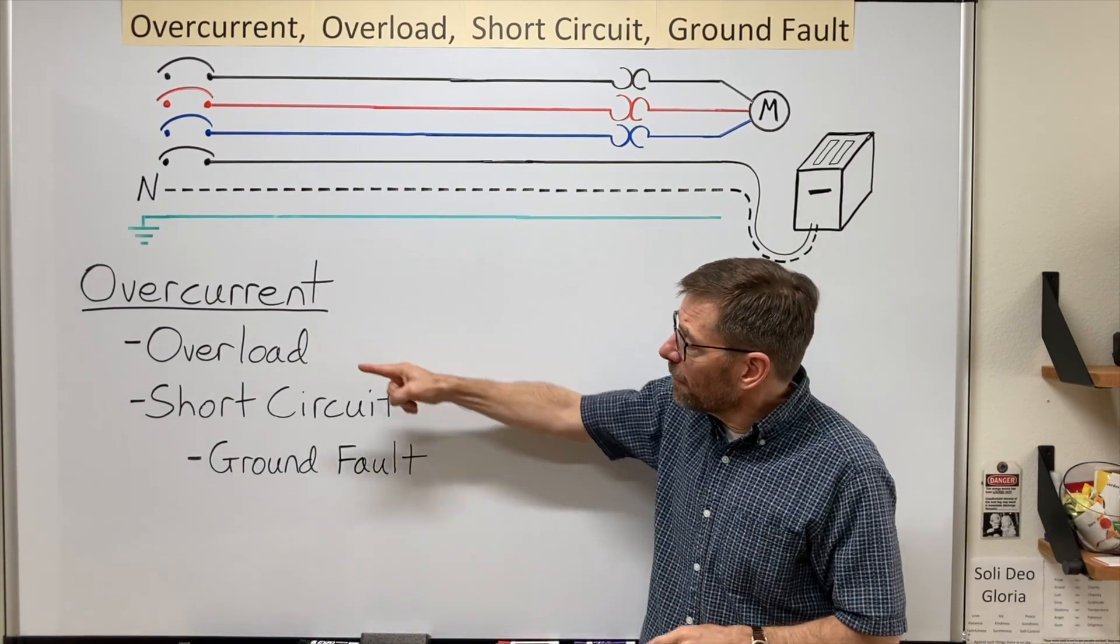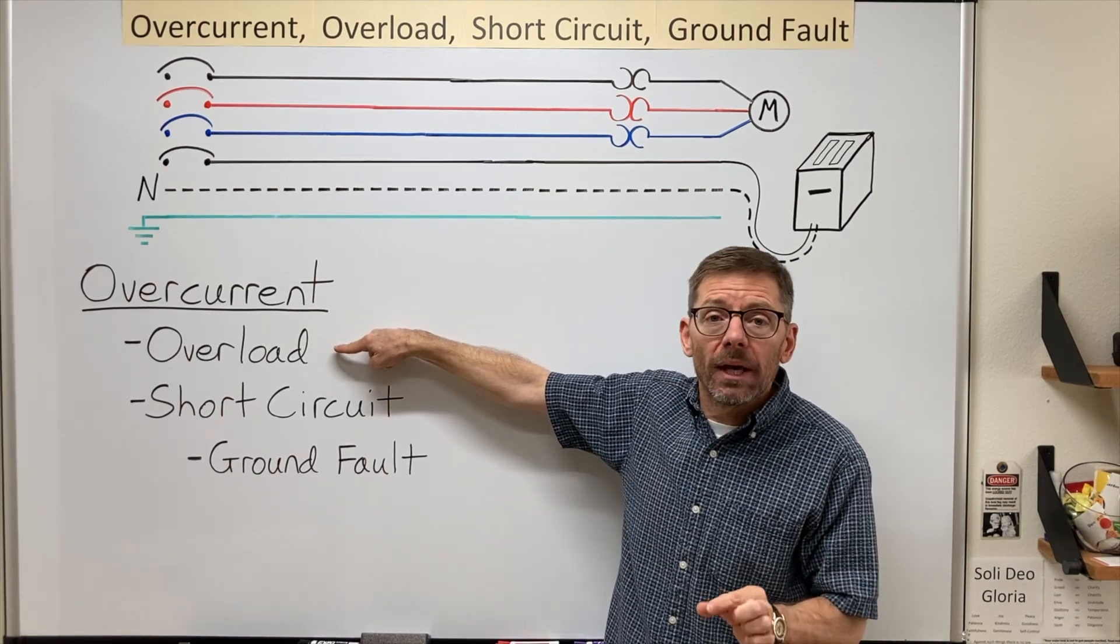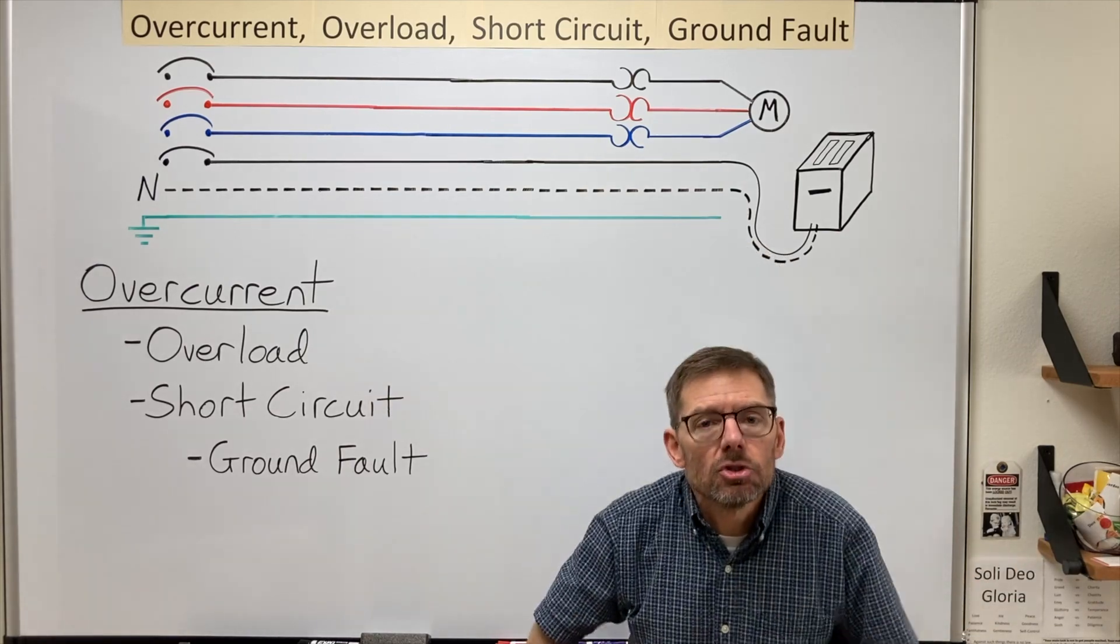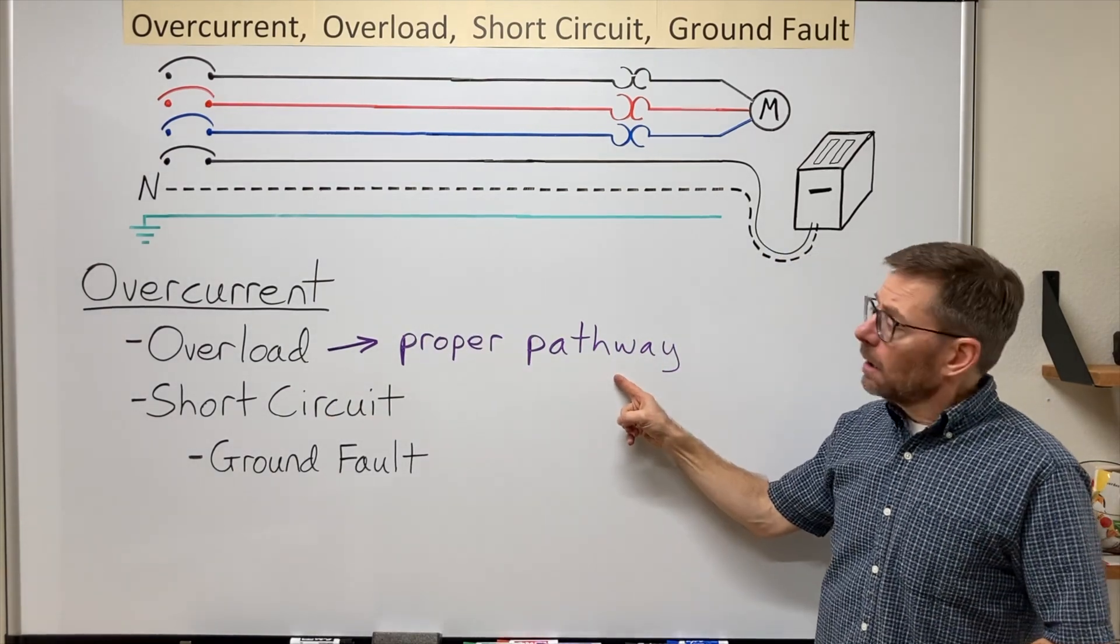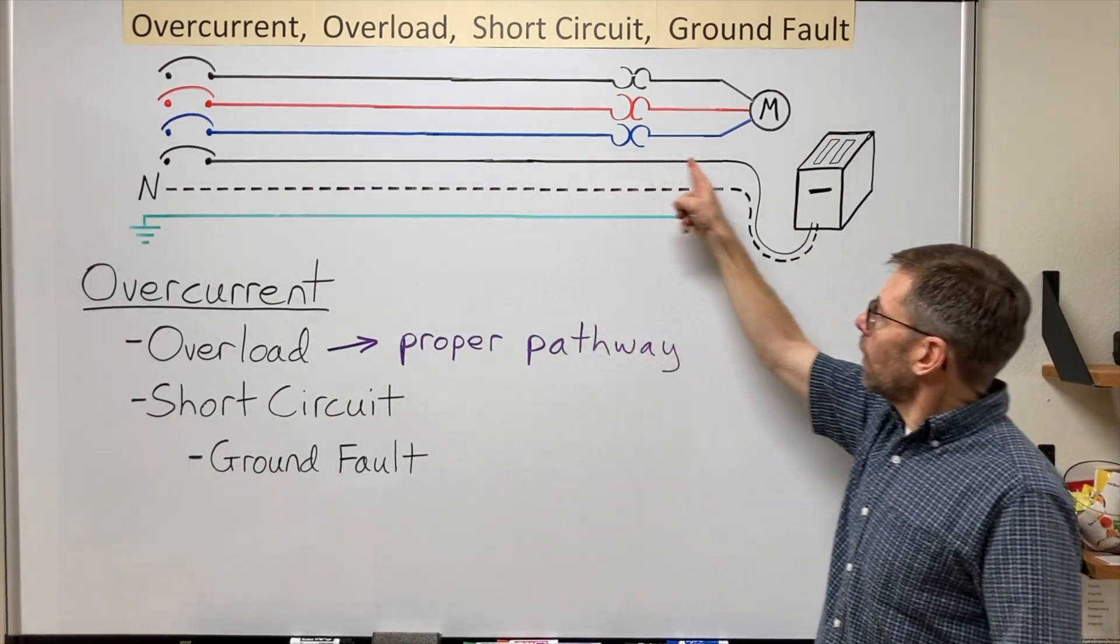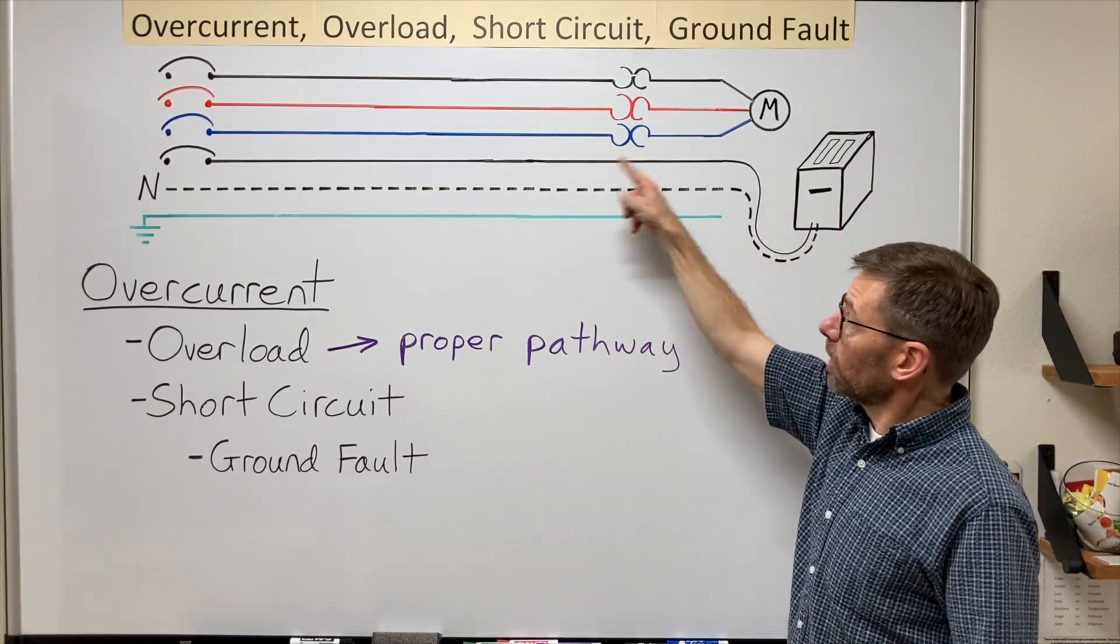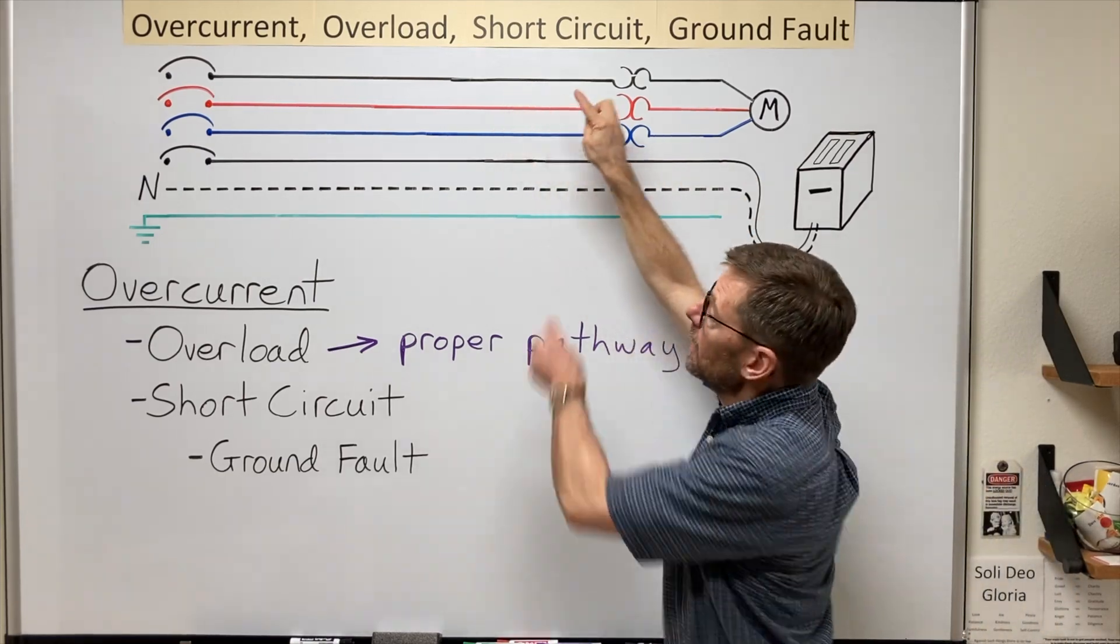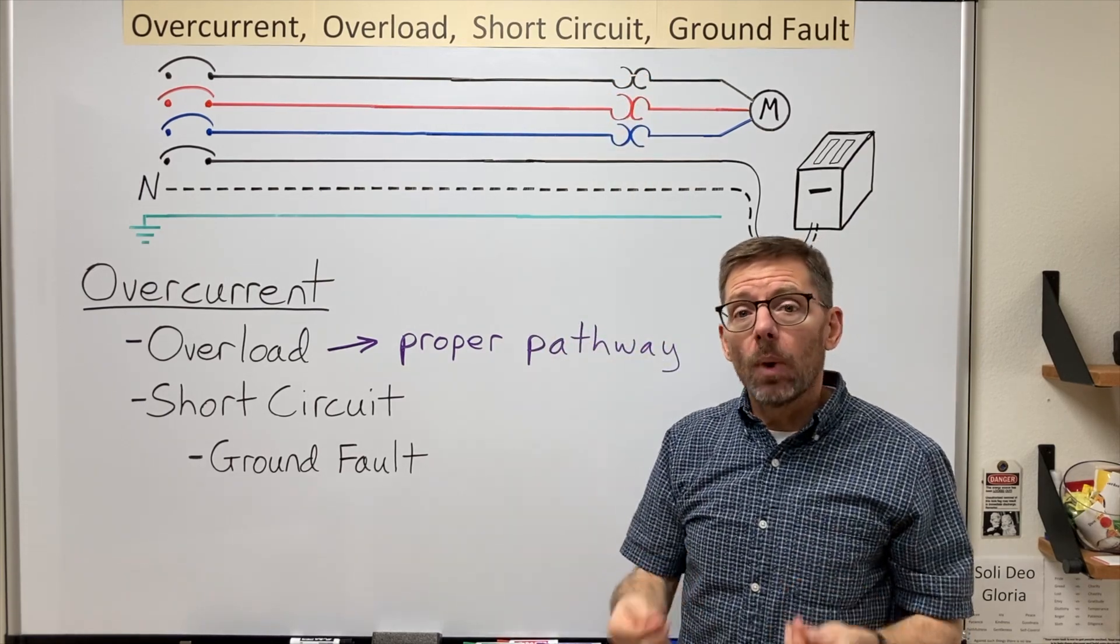But one thing I want to say about overloads is that the current is flowing in the proper pathway. There's just too much of it. By proper pathway, I mean that the current is going down the hot, through the load, and back the neutral. Back and forward, it is AC. Or in a multi-phase situation, it's going back and forward on the appropriate conductors in the intended way.